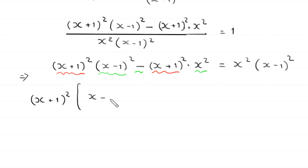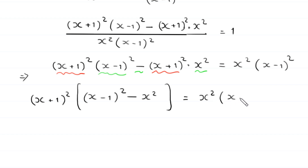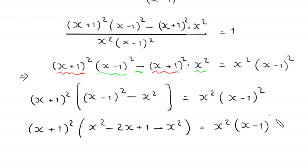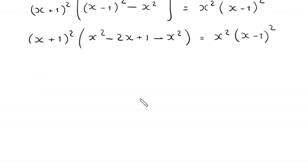So (x + 1)² times [(x - 1)² - x²] = x² times (x - 1)². Next, we expand (x - 1)², which becomes x² - 2x + 1, and subtract x², giving 1 - 2x. This negative x² cancels with the positive x², leaving 1 - 2x inside the bracket.